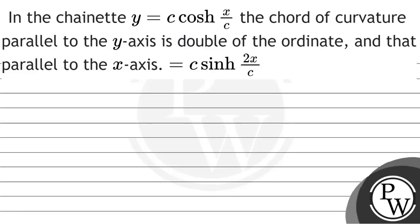Hello, let's see the question. The question says that in the catenary y = c·cosh(x/c), the chord of curvature parallel to the y-axis is double the ordinate, and we need to find the chord parallel to the x-axis, which is equal to c·sinh(2x/c).